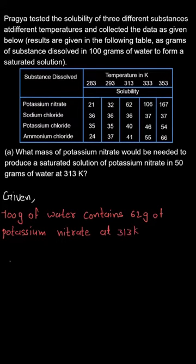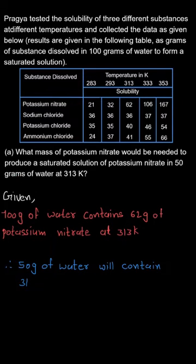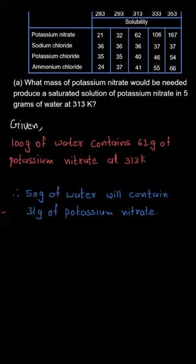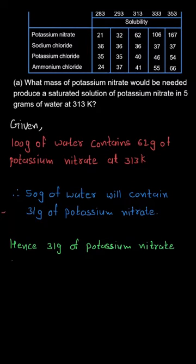We need to find the amount of potassium nitrate needed for 50 grams of water. Since 62 grams of potassium nitrate is needed for 100 grams of water, for 50 grams of water — which is half of 100 — we use half the weight, that is half of 62, which equals 31 grams of potassium nitrate.